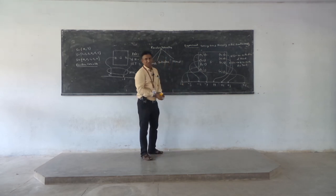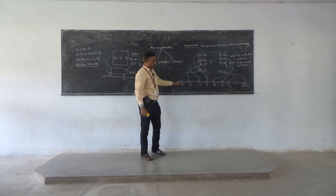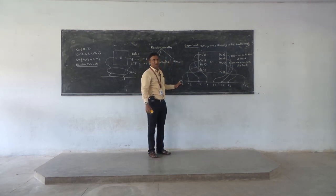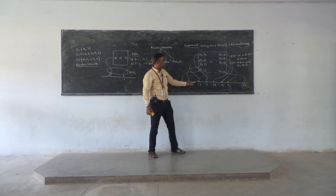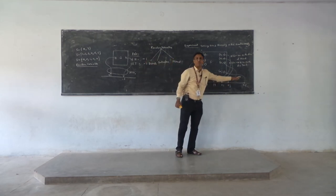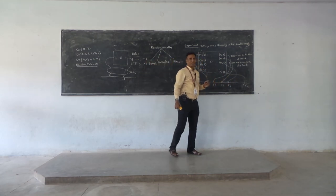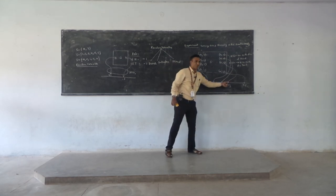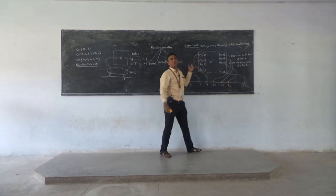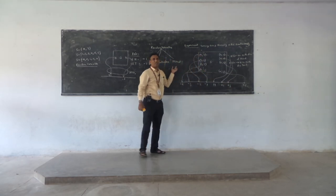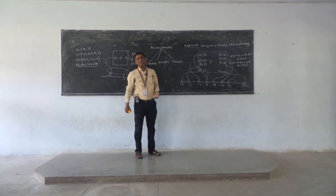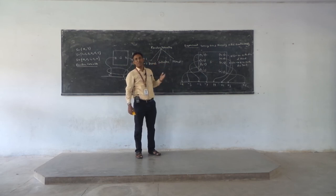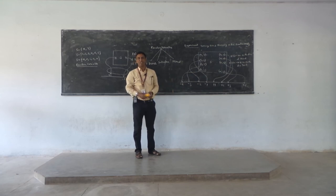If we observe the values of the random variable, they are minus 6, minus 5, minus 4, and so on up to 1, 2, 3, 4, 5, 6. Since the values of the random variable are discrete, this random variable is called a discrete random variable. In the next class, we will discuss continuous random variables, mixed random variables, and other related phenomena. Thank you.